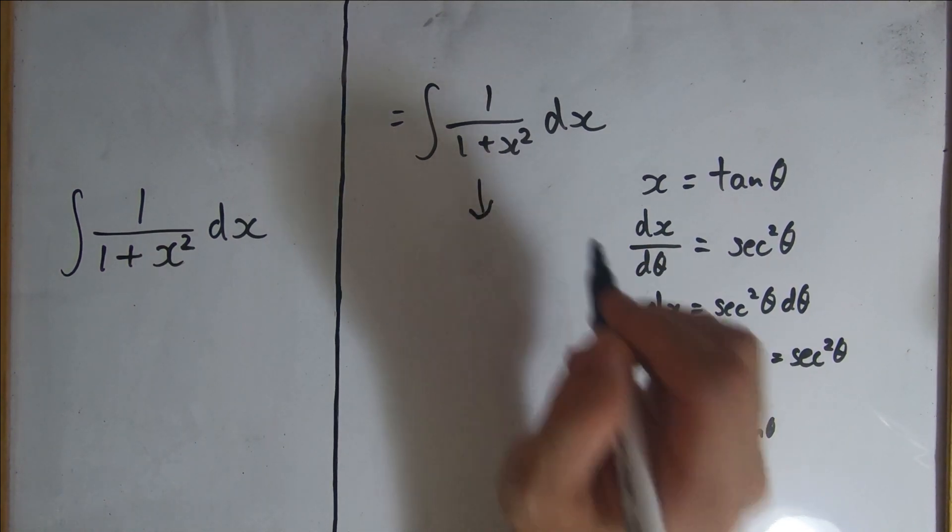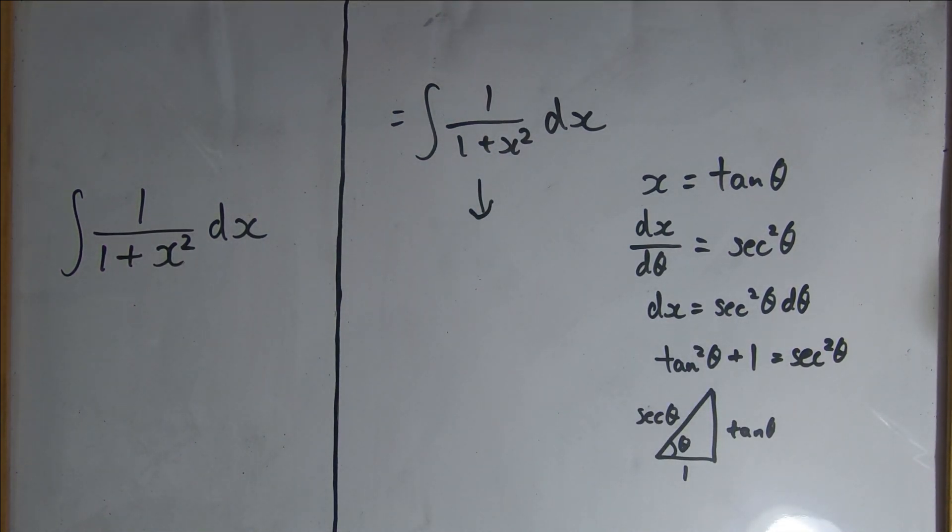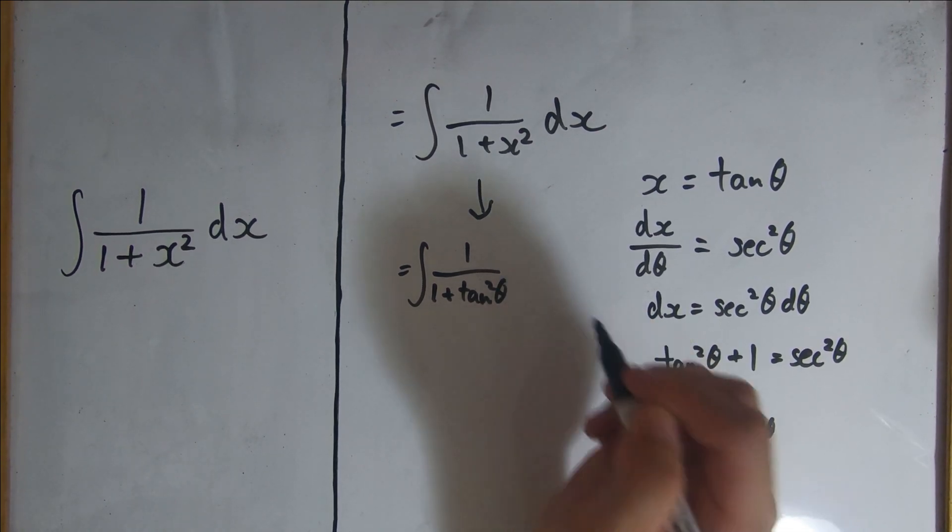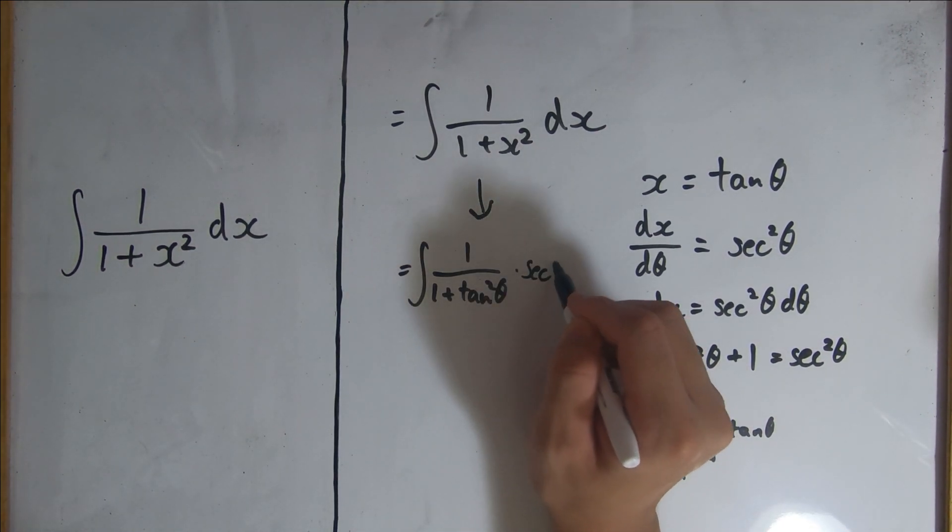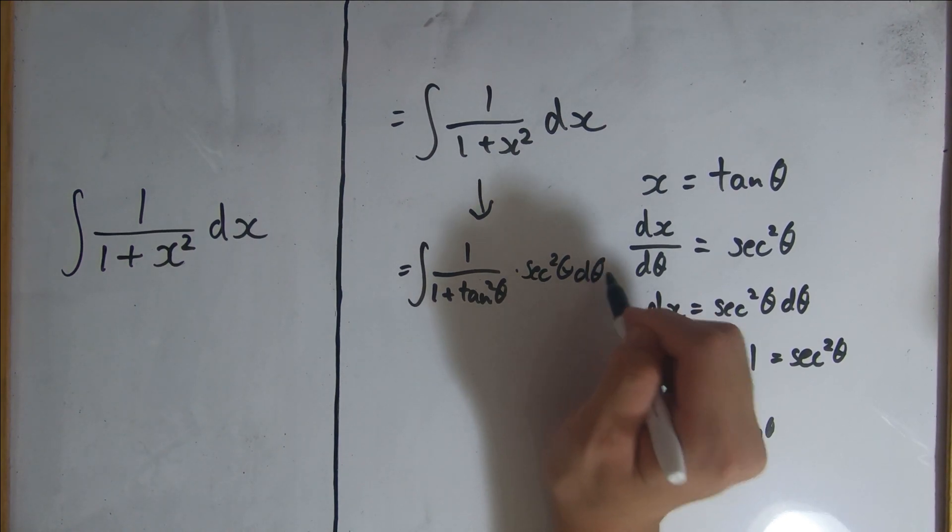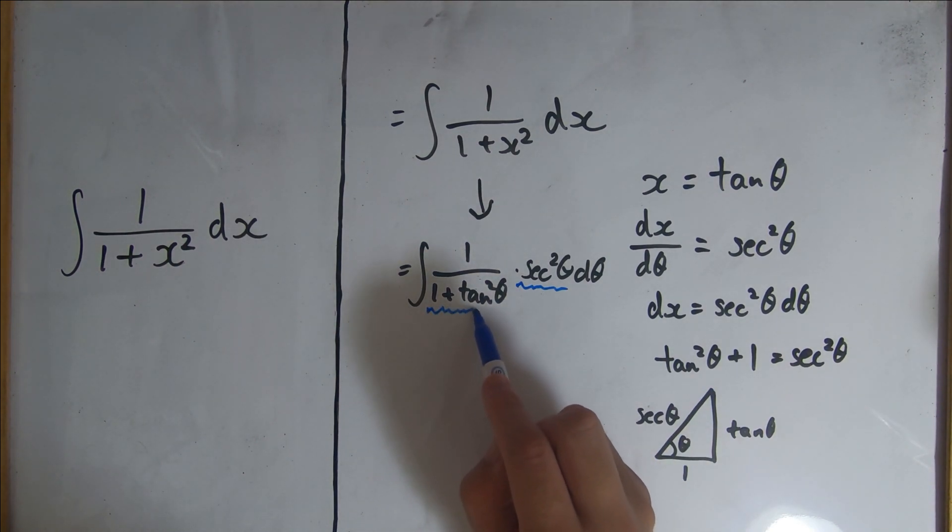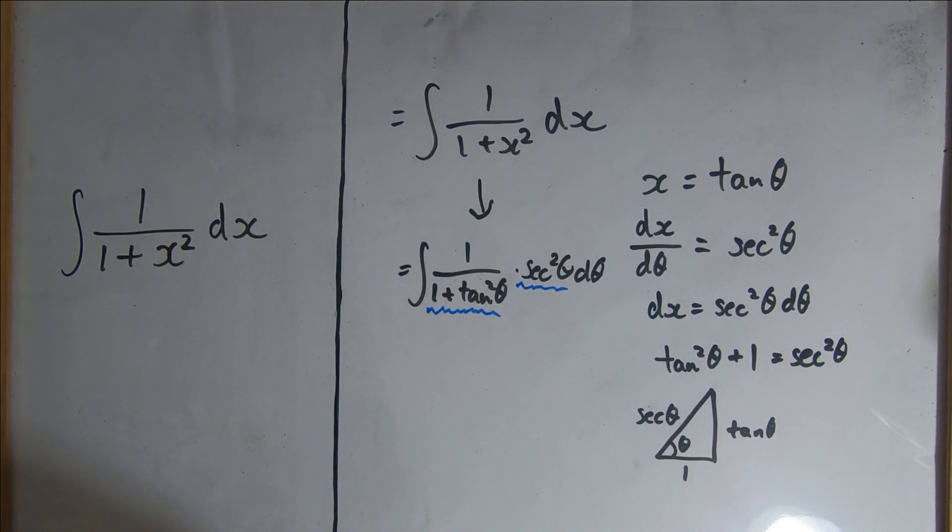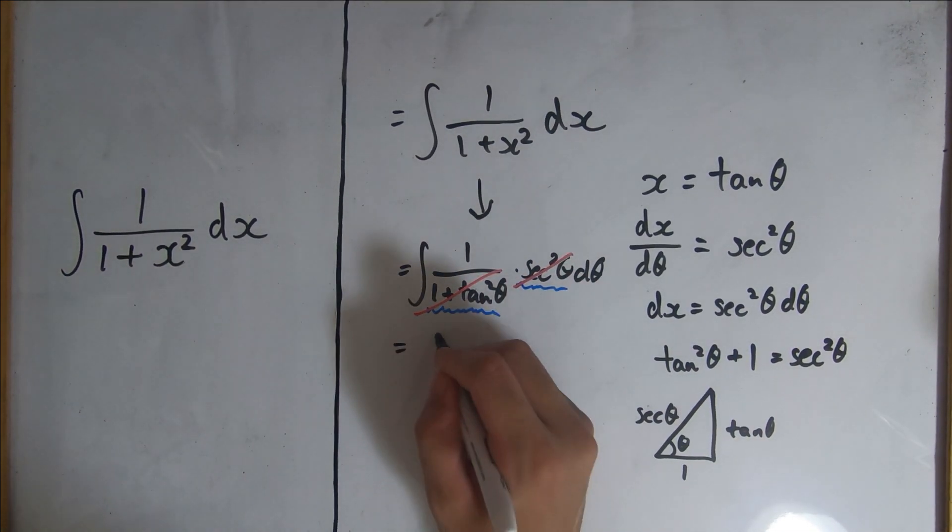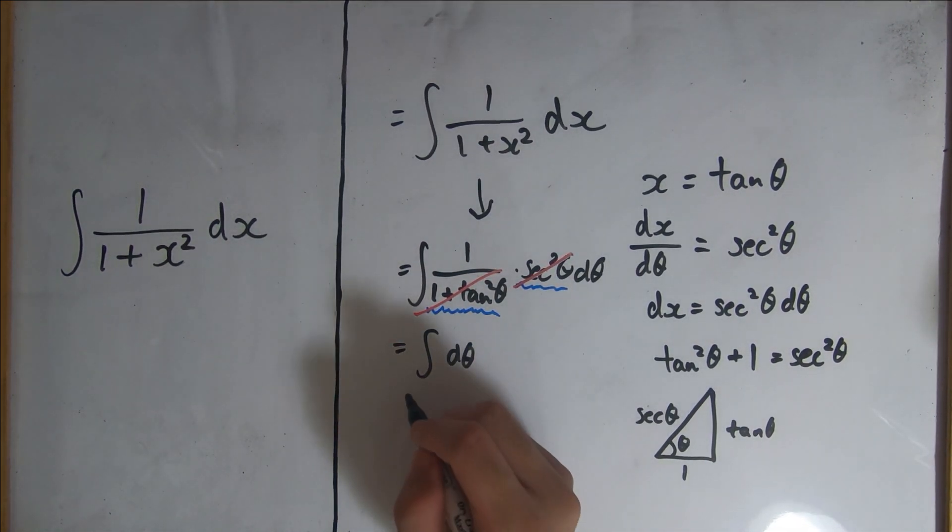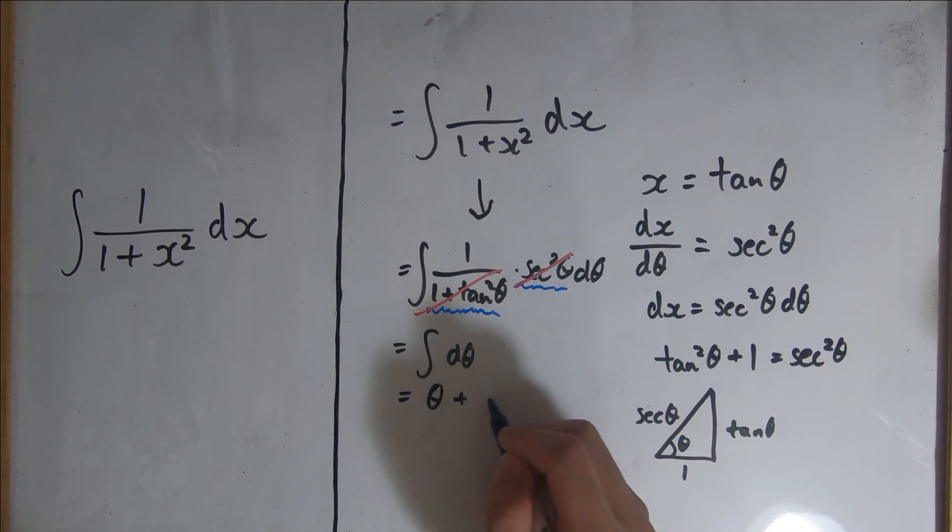Now let's substitute our values into the equation we wrote at the beginning. We have the integral of 1 over 1 plus tangent squared theta times secant squared theta d theta. If you recall, secant squared theta equals 1 plus tan squared theta. So we can cancel the numerator and denominator, ending up with the integral of d theta, which is a very simple integral that simply equals theta plus c.